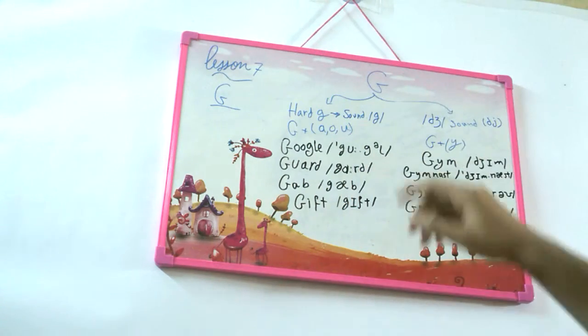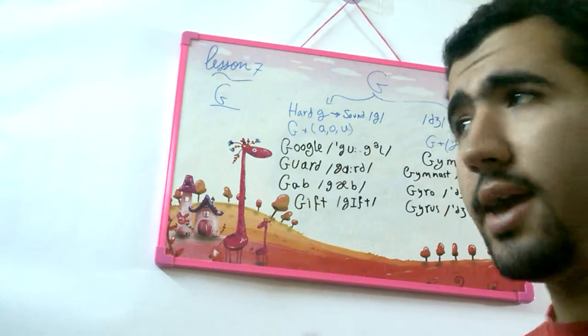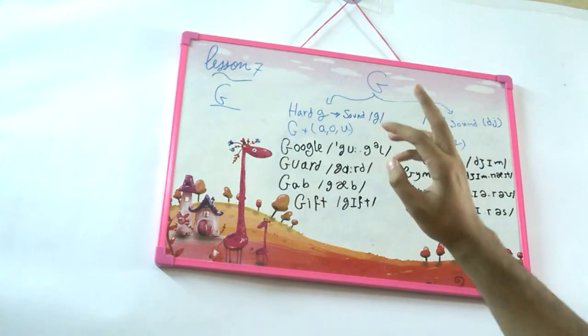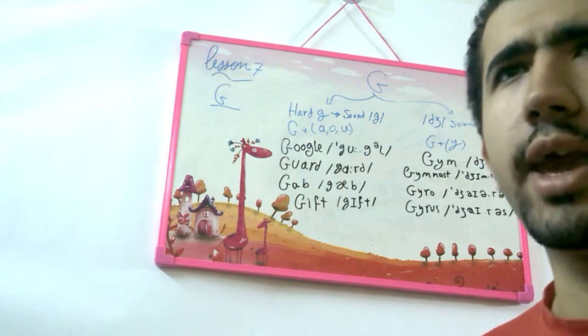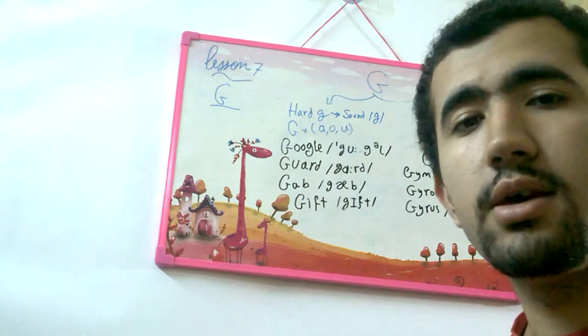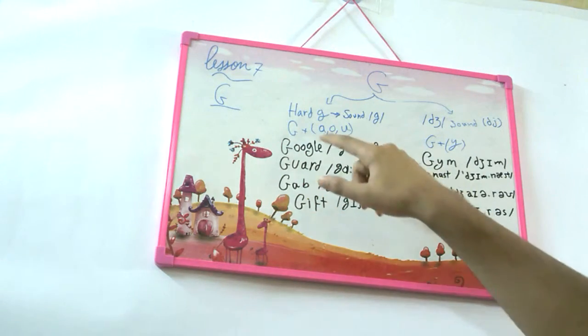The first pronunciation: when G is followed by A or O or U, the G letter here is pronounced as hard G. Some words do not follow that rule, like gift.